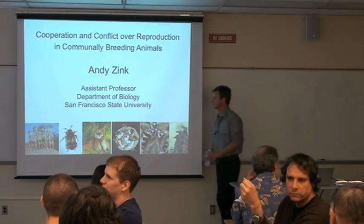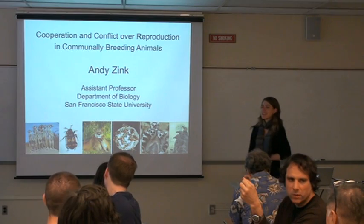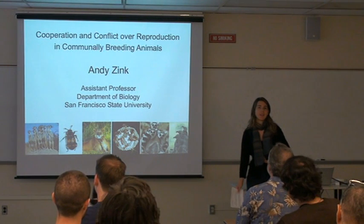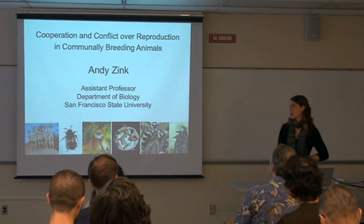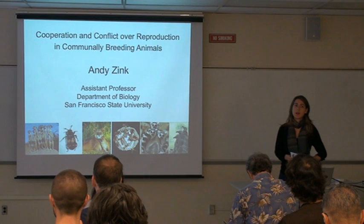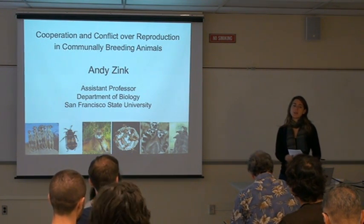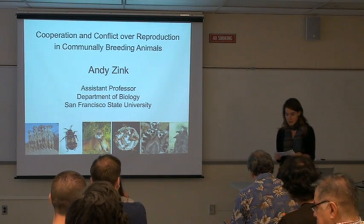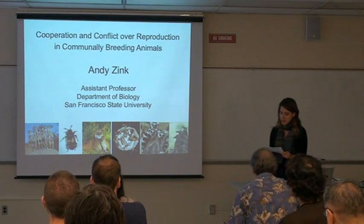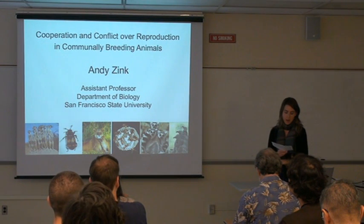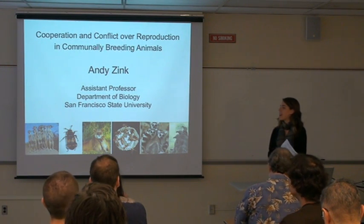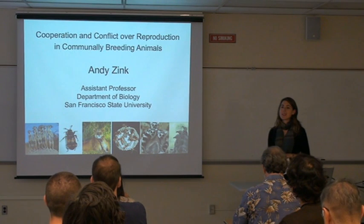All right, everybody, please welcome Dr. Andy Zink. He's a faculty member here at the biology department. He double majored in biology and philosophy for his bachelor's degree, then went on to Cornell for a PhD in ecology and evolution, and a post-doctoral fellowship at UC Davis. Today he's going to give a talk on cooperation and conflict over reproduction in communally breeding animals. Some of the organisms he works with are the Batrachoseps salamanders, maritime earwigs, and golden broad tree hawkers. We're going to be going out to lunch afterwards if anyone would like to join us.